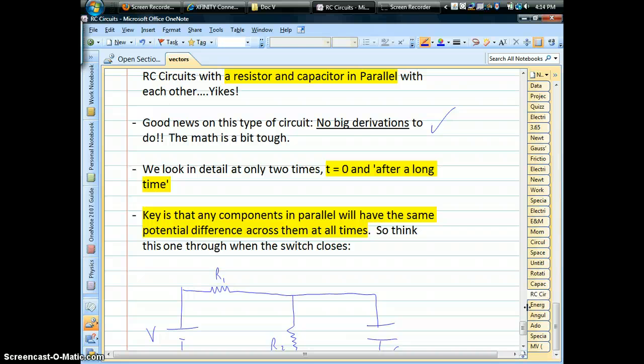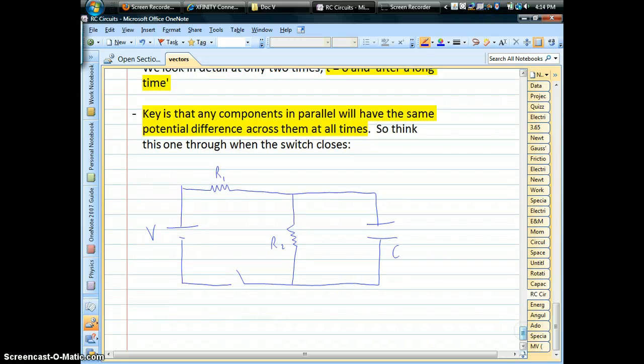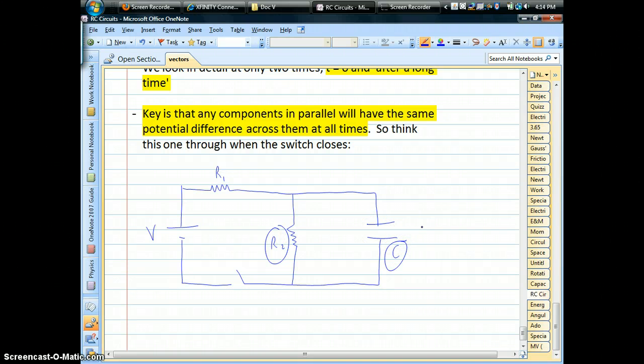Instead, as far as details go, we only look at two times, right when you close the switch, and then after the famous or infamous long time when things are running. And the other thing I've highlighted here is really the key to this is just remember what parallel means. In this case, resistor 2 and this capacitor always have to have the same voltage. At all times, the same instantaneous voltage.